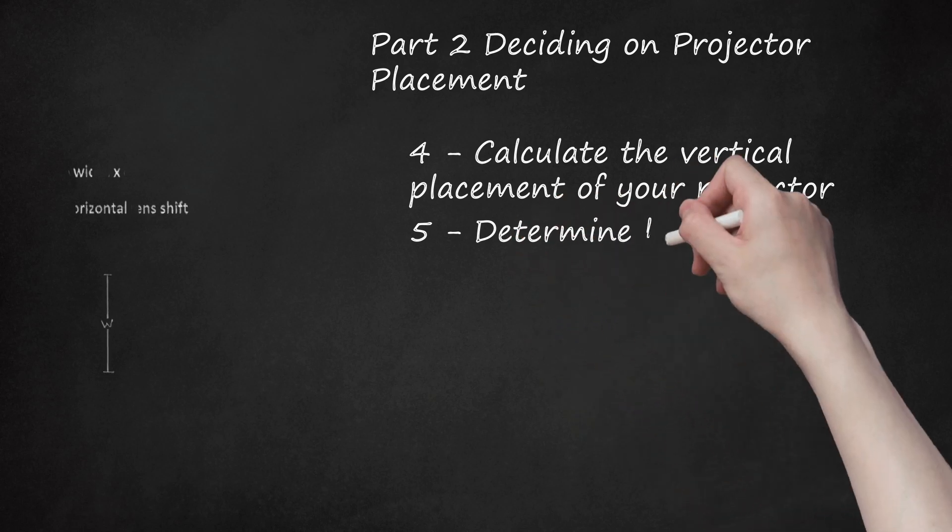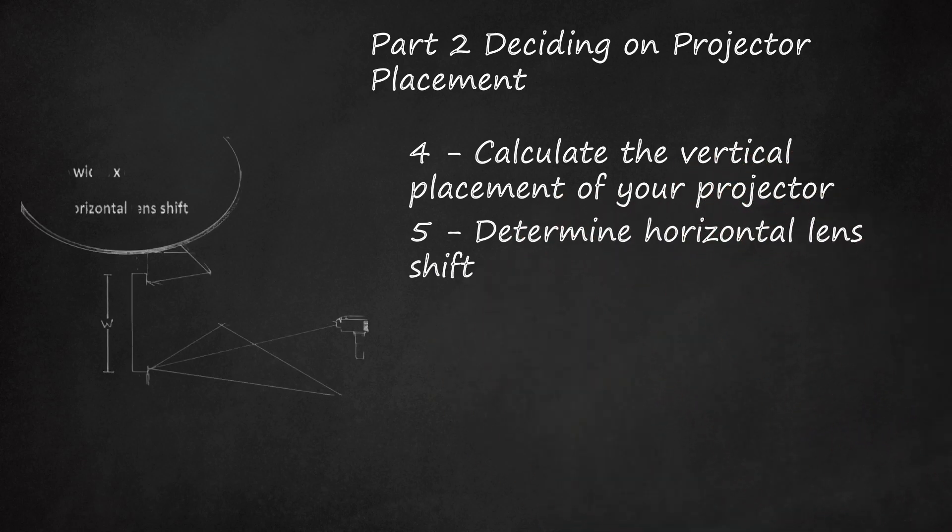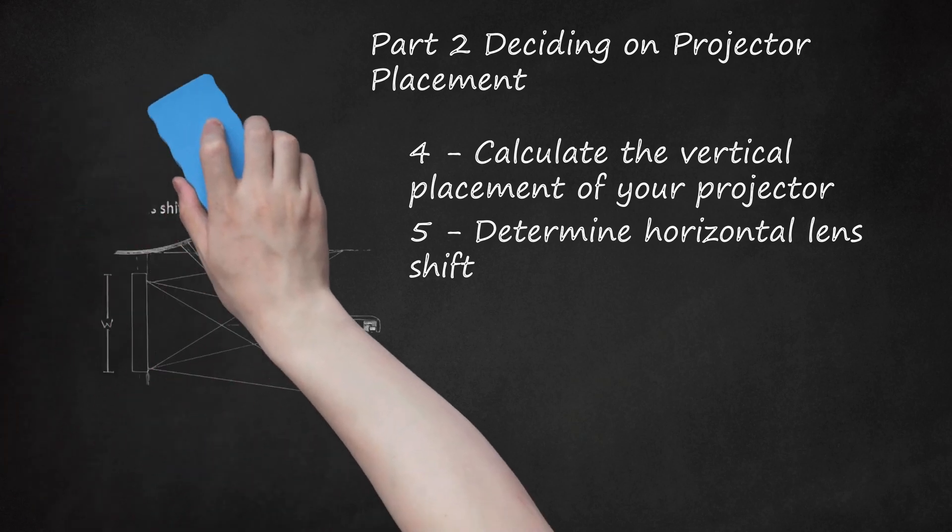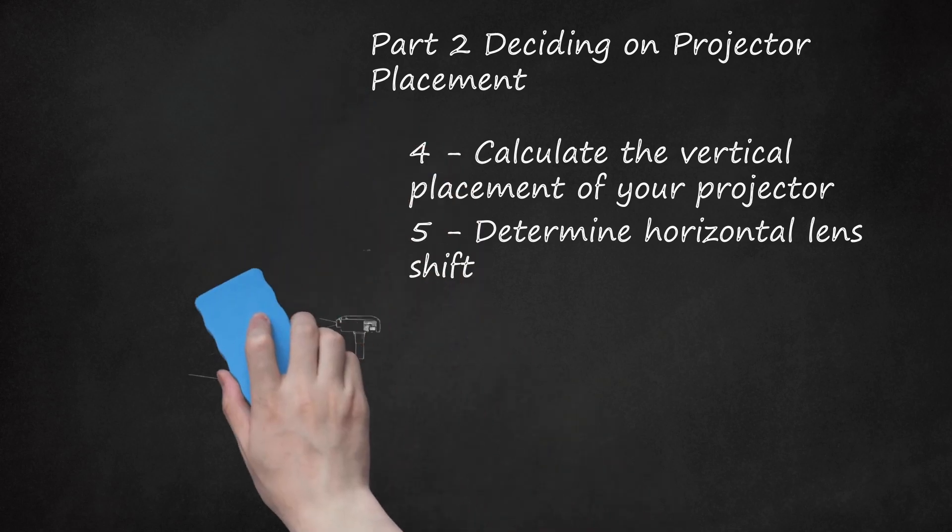5. Determine horizontal lens shift. It's ideal to mount the projector so that it lines up with the center of the screen widthwise, but if your room layout requires otherwise, you'll need to calculate your horizontal lens shift. The rules for horizontal lens shift are nearly the same as for vertical lens shift, except that you use this formula: screen width × offset percentage = distance of lens to left or right of screen center. It's best to avoid using horizontal lens shift whenever possible, as this can distort your image and cause issues with your vertical lens shift.